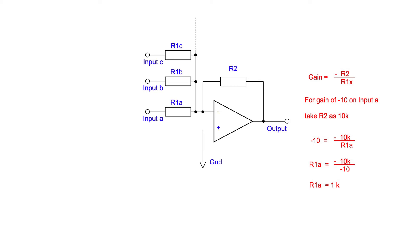And of course we're not limited to making the gain the same for each input. For a gain of, say, minus 5 on input B, we can use exactly the same logic, and we can see that R1b comes out to be 2 kilohms.